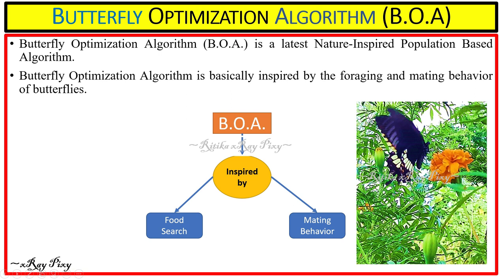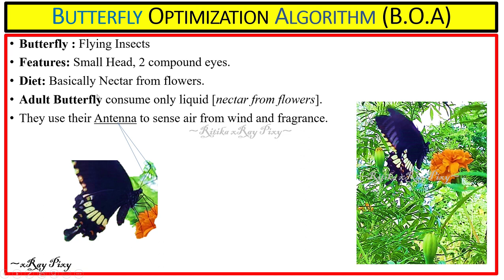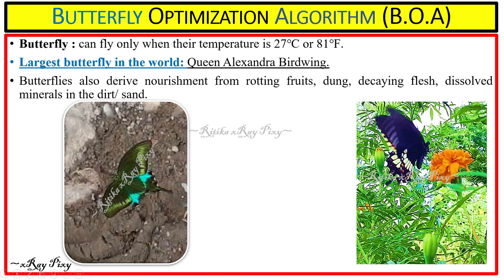In order to understand how this algorithm works, it is important to understand butterfly behavior in nature. Butterflies are flying insects with bright colors, a small head, and compound eyes. They are the most appealing creatures in nature. They feed on nectar from flowers — an adult butterfly consumes only liquid nectar. They can use their antennas to sense wind and fragrance, and they can fly when the temperature is around 27 degrees Celsius.